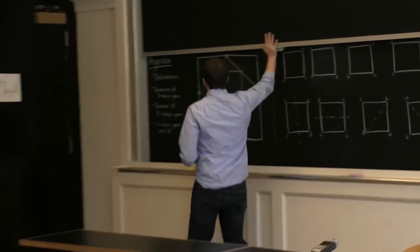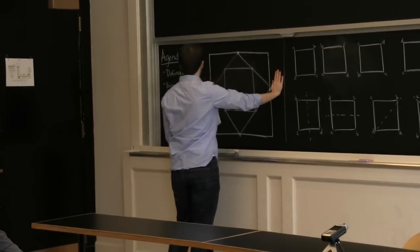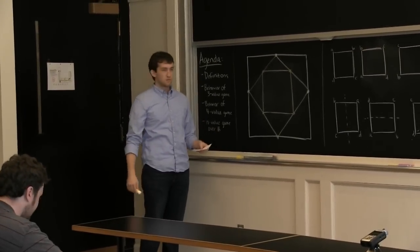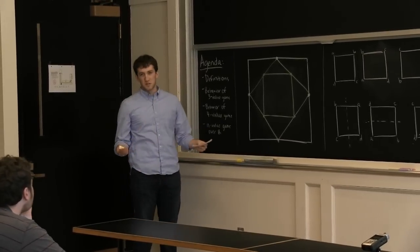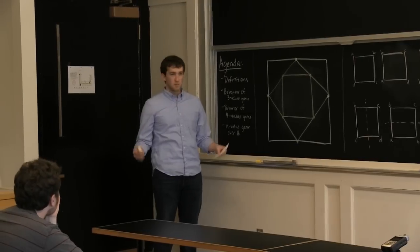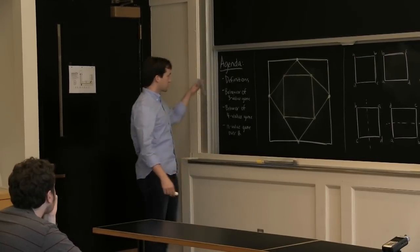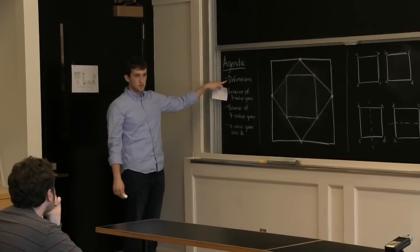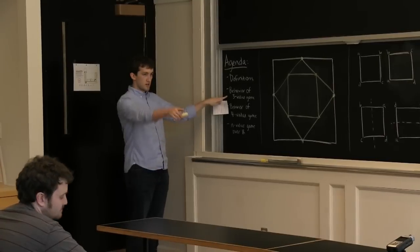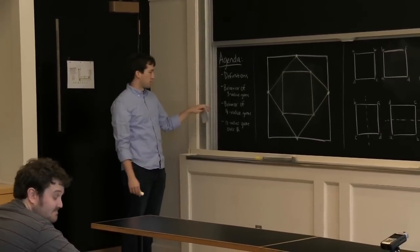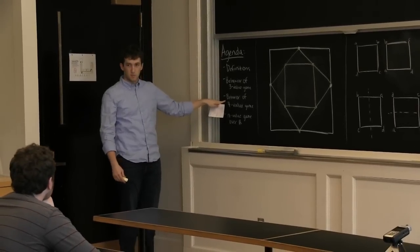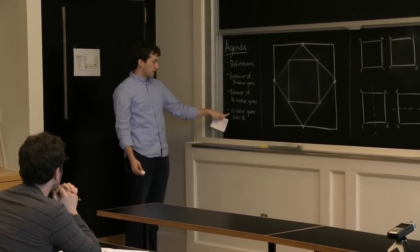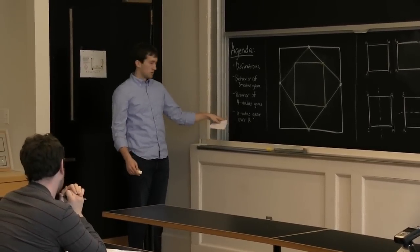As Professor Miller said, our project was called NumberSquare, and we sort of changed the name to the n-value game. Our agenda for the day is going to cover a few definitions to set up the problem. Ida is going to talk about the behavior of the three-value game, and then Matt is going to talk about the behavior of the four-value game and also the n-value game over the real numbers.